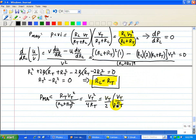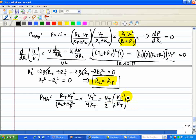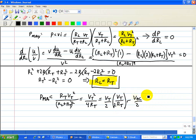And that's just VOC over 2, and this is VT over RT is just our short circuit current, so it's ISC over 2. So that's our expression for maximizing our power.